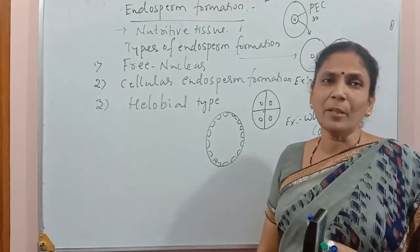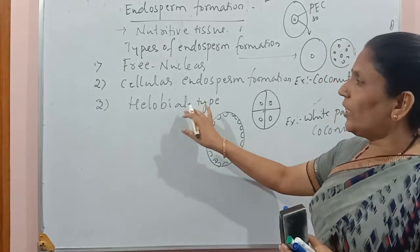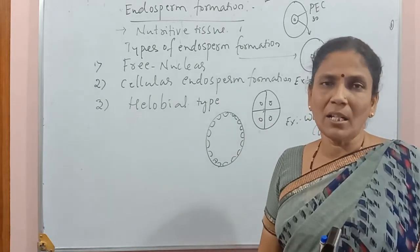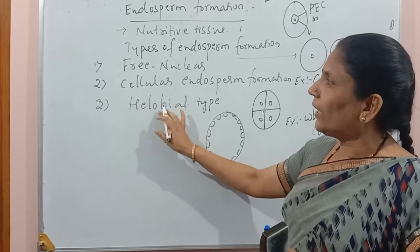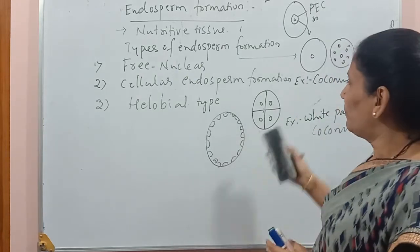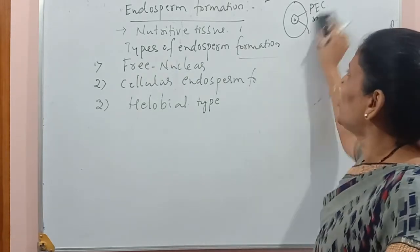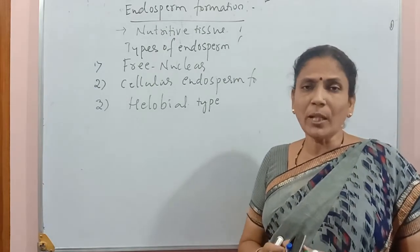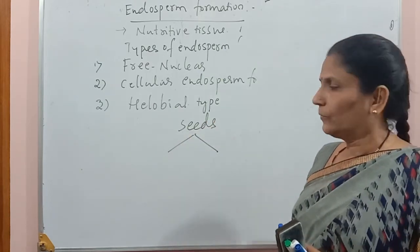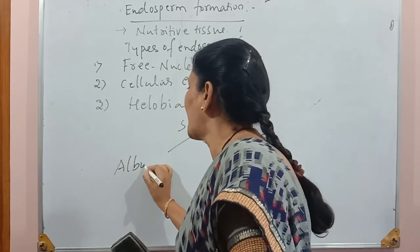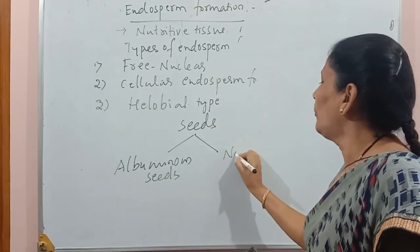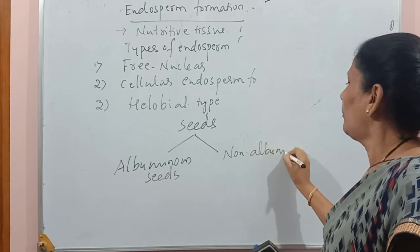In the helobial type it is an intermediate type — initially it is cellular, and later it becomes free nuclear. These are the three types of endosperm formation. With the presence or absence of endosperm, we divide seeds into two types: albuminous seeds and non-albuminous seeds.